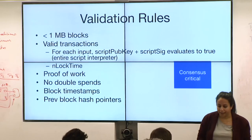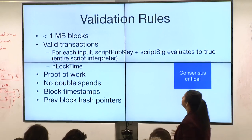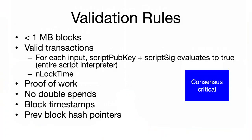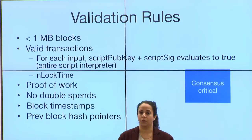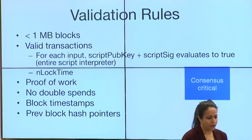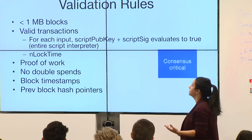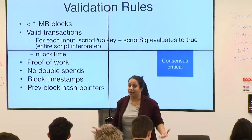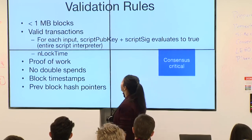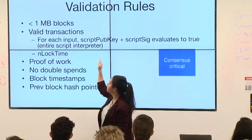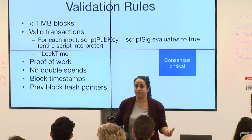The way a node decides is that it has a set of validation rules specified by the Bitcoin protocol, and it checks blocks against those rules. Every Bitcoin node is constantly validating blocks. Here are some of the validation rules: first, there's a max block size — if you fail any rule, you reject the block. Currently max block size is set to one megabyte.